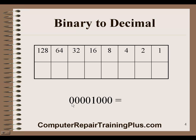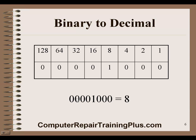Down here we have a binary number: 4 zeros, a 1, and then 3 zeros. How would you convert an 8-bit binary number to a decimal? We use the block up here as a guide. Placing the bits in their positions — 0, 0, 0, 0, 1, 0, 0, 0 — that 1 is in the 8's place, giving us a value of 8. So 00001000 equals decimal 8. We've just converted our first binary number to a decimal.